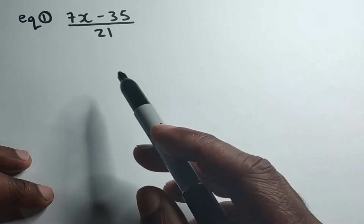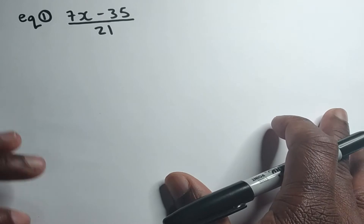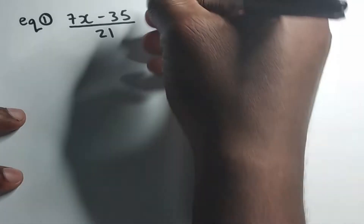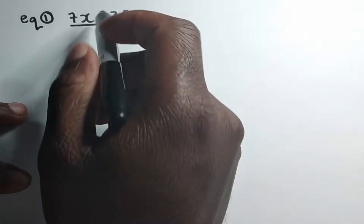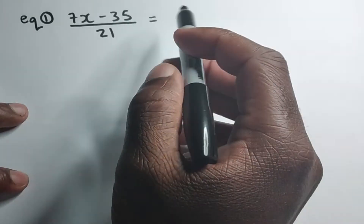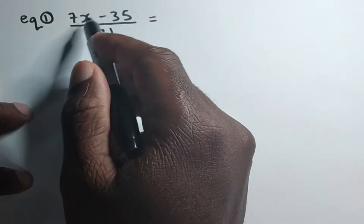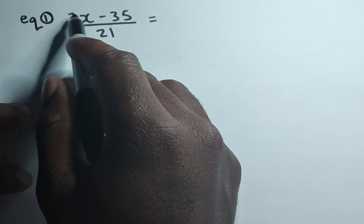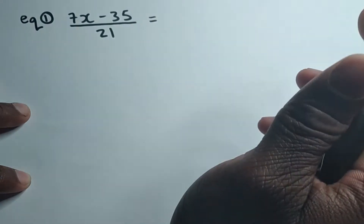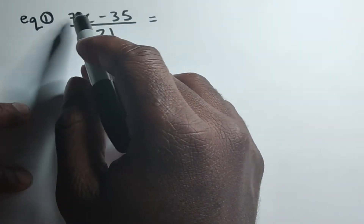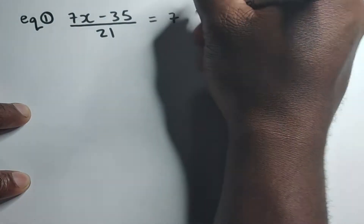Example one: we have seven X minus 35 over 21. What we want to do first is to factorize the numerator. So here we have seven X minus 35. We want to identify the highest common factor. We only have X in the first term, not the second, so it won't be X. Looking at the numbers, the highest common factor for seven and 35 is seven.